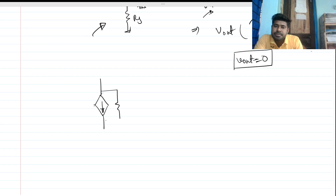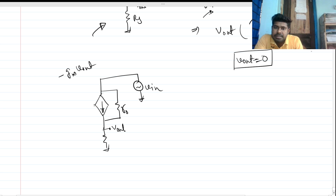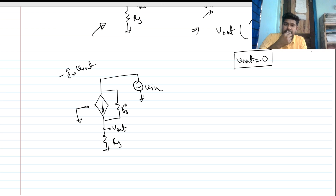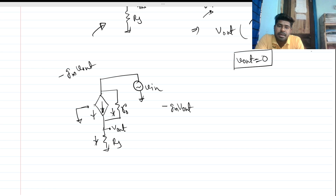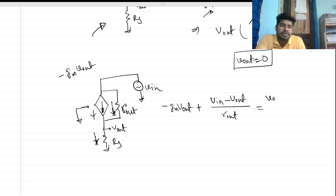With channel length modulation, the model now includes Rout. We have Vin, the dependent source minus gm times Vout, Vout, RS, and the gate is grounded. Applying KCL, the two currents sum: minus gm times Vout plus the current through Rout, which is (Vin minus Vout) divided by Rout, equals Vout over RS.